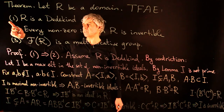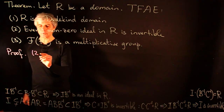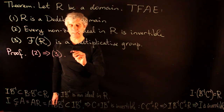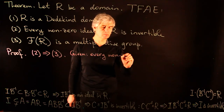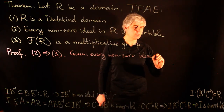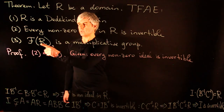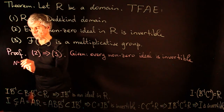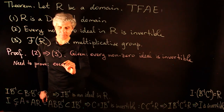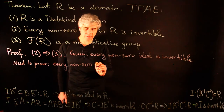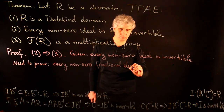We have proved that in a Dedekind domain every nonzero ideal is invertible. Now let us prove that two implies three. We are given that every nonzero ideal is invertible, and we need to show that F(R) is a multiplicative group, i.e., every nonzero fractional ideal is invertible.